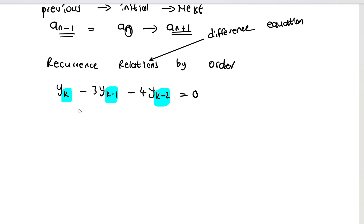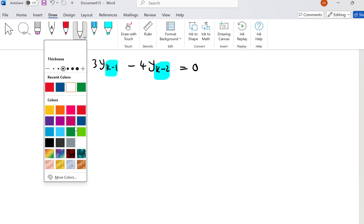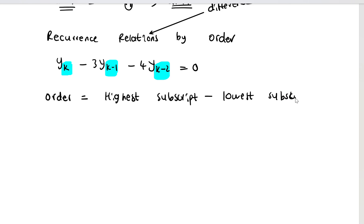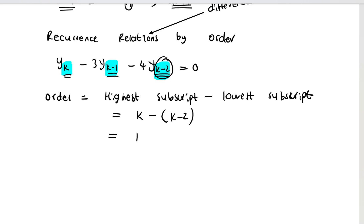We are not solving this equation yet — in this lesson we are just classifying by order. The order of a recurrence relation is given by the highest subscript minus the lowest subscript. Between k, k-1, and k-2, the highest is k and the lowest is k-2. So the order equals k minus (k-2), which gives k minus k plus 2, and the answer is 2. The order of this recurrence relation is 2.